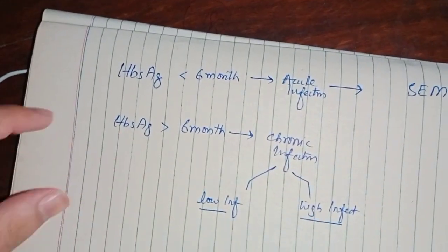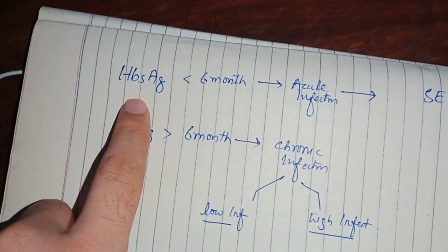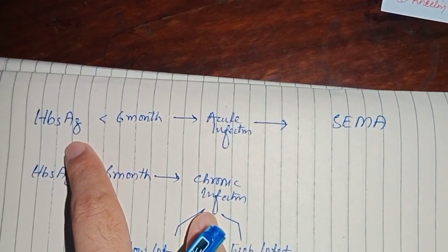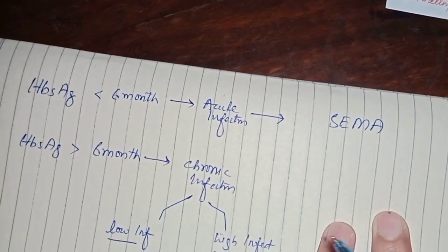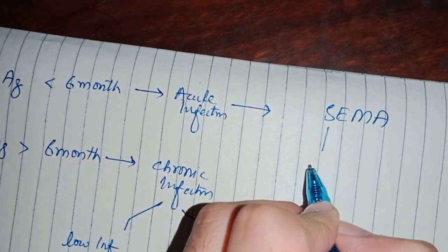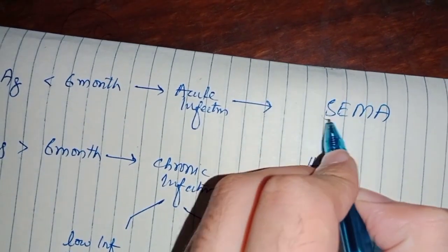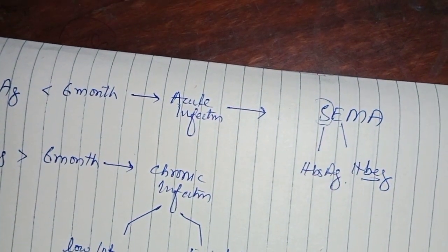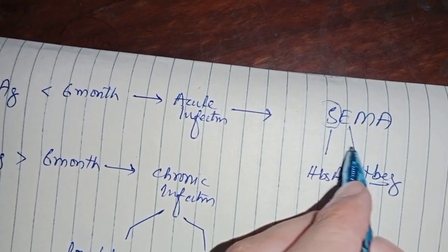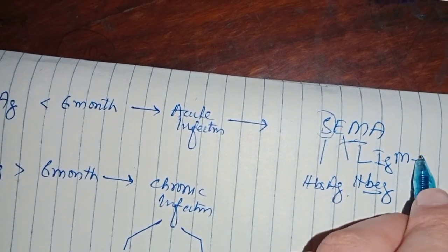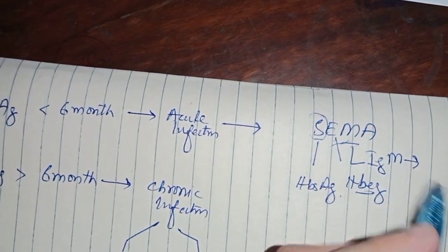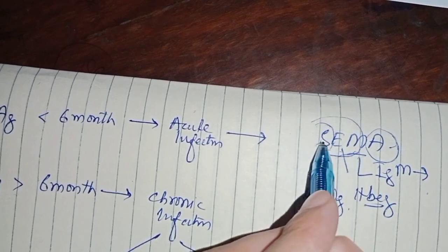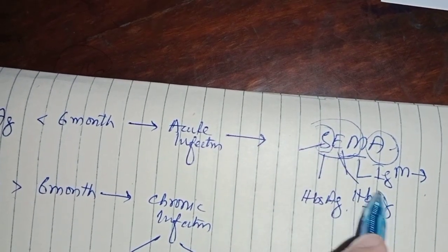In acute infection — hepatitis B surface antigen present for less than 6 months — you will have certain antigens and antibodies. You can remember this with the mnemonic SEMA. First you will have hepatitis B surface antigen, then hepatitis B E antigen — this represents that the hepatitis B virus is being replicated inside your hepatocytes. Then you have IgM antibody, formed against the hepatitis B core antigen — the 'A' represents acute. So in acute condition: hepatitis B surface antigen, hepatitis B E antigen, and IgM antibody.